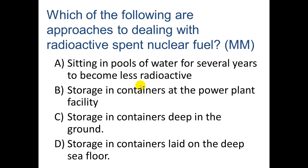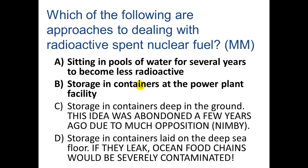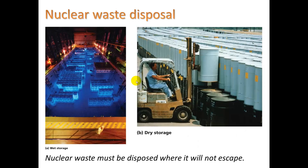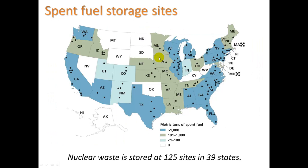Let's take a look at nuclear waste. Approaches to dealing with radioactive spent nuclear fuel include: first, letting the solid fuel sit in pools of water for several years to become less radioactive — wet storage. Then taking them out and storing them in dry containers called casks, usually at the power plant facility. We can see a picture of wet storage and these casks for dry storage. All these dots on the map are nuclear power plants, including one right here in San Luis Obispo.